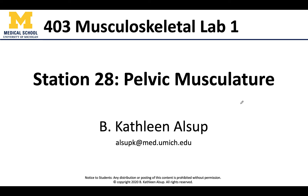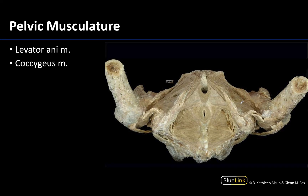Hello anatomy friends, we have reached our final station for the musculoskeletal lab one — station 28 — and we are going to look at some of the pelvic musculature. As mentioned in the lecture videos, some of the perineal musculature will be discussed in more detail in the reproductive portion of the course. We're more focused on the pelvic diaphragm region, so these more superficial muscles will be discussed later.